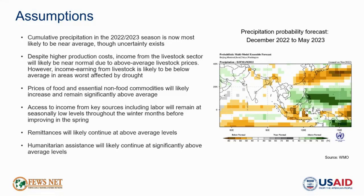Income earning from the livestock sector is expected to be near normal overall, with above average livestock prices compensating for higher production costs such as fodder. However, income earning from livestock will likely be below average in areas worst affected by drought in the prior two seasons due to declining herd sizes and in some cases declining prices where households engage in atypical sales during the coming lean season. Prices of food and essential non-food commodities will likely increase and remain significantly above average due to high global prices and high transportation costs. Below average national crop production and higher regional prices will also contribute to above average wheat flour prices, generally expected to increase throughout the winter and lean seasons.